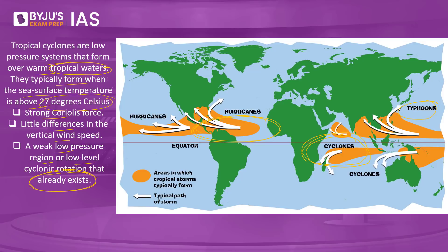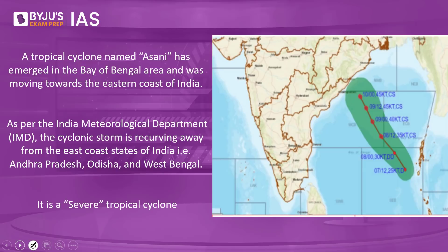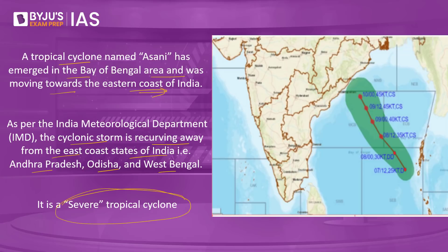Do remember this — it can be very important from the preliminary examination point of view. Now let's discuss Cyclone Asani. It is a tropical cyclone which emerged in the Bay of Bengal and was moving towards the eastern coast of India. As per the India Meteorological Department, the cyclonic storm is recurving away from the east coast states — Andhra Pradesh, Odisha, and West Bengal — and this is a severe tropical cyclone.